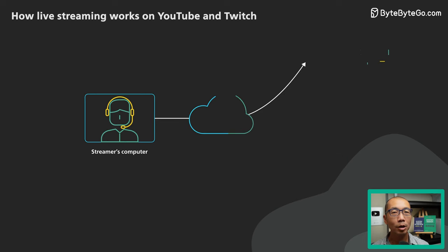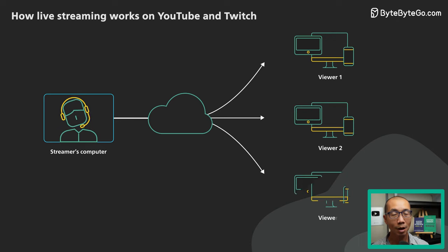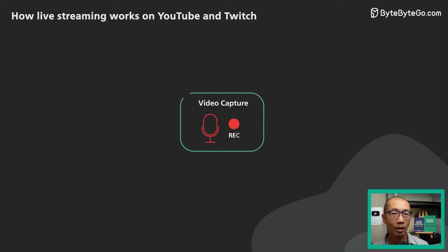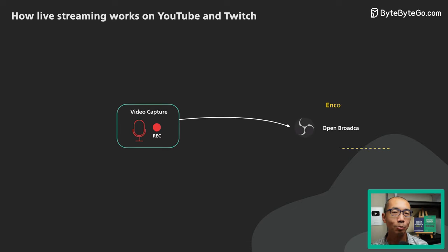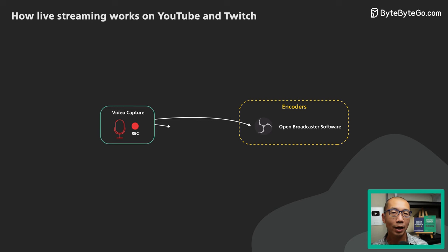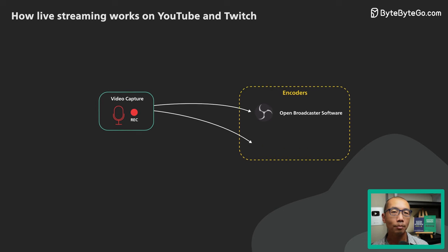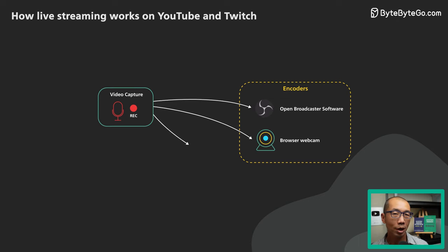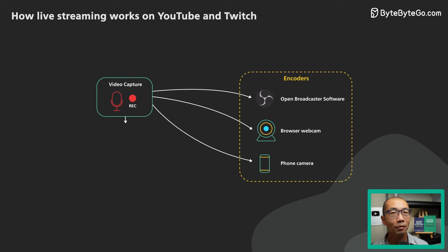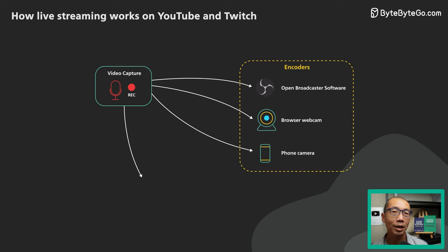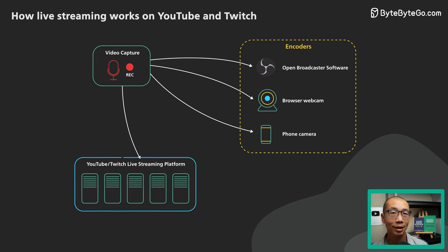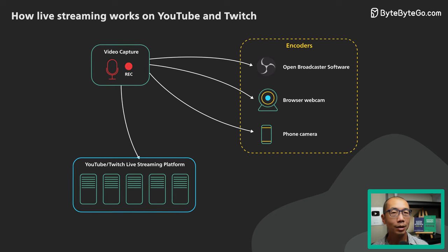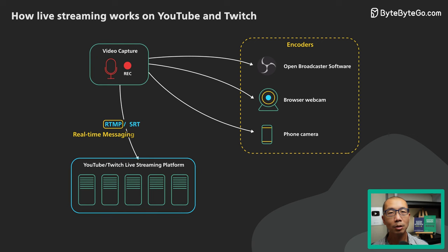Let's look at how a video stream goes from the streamer to the viewers. First, the streamer starts the stream. The source could be any video and audio source wired up to an encoder, such as the popular open source OBS software. Some popular platforms like YouTube provide easy-to-use software to stream from a browser with a webcam or directly from a mobile phone camera. The encoder packages the video stream and sends it using a transport protocol the live streaming platform can receive for further processing.